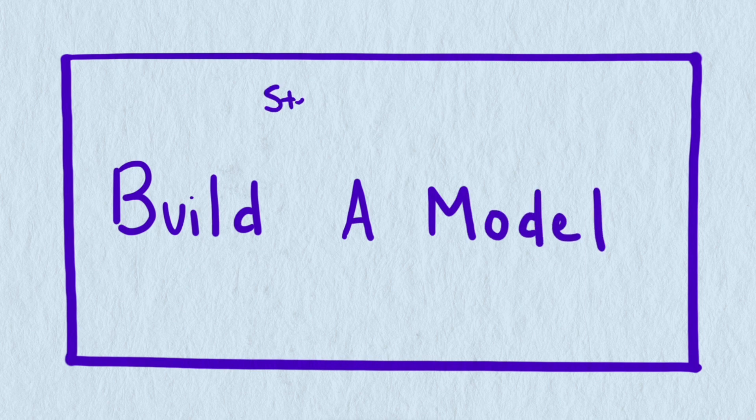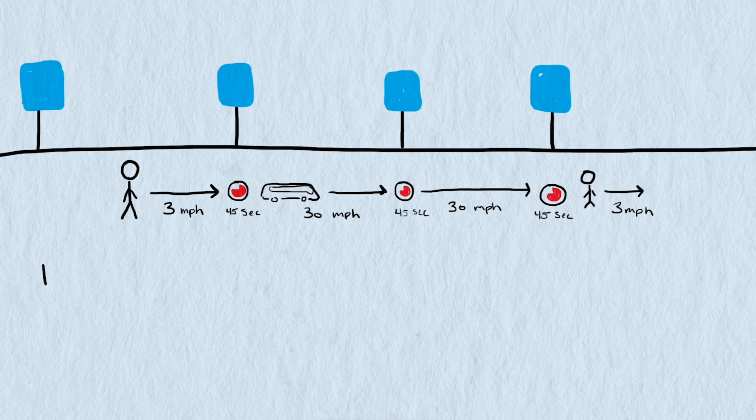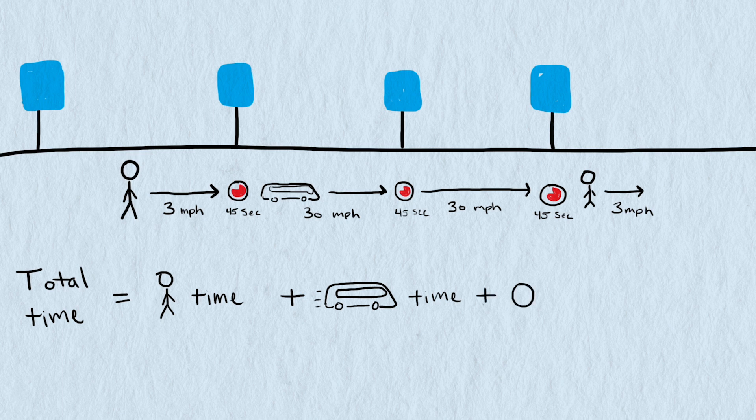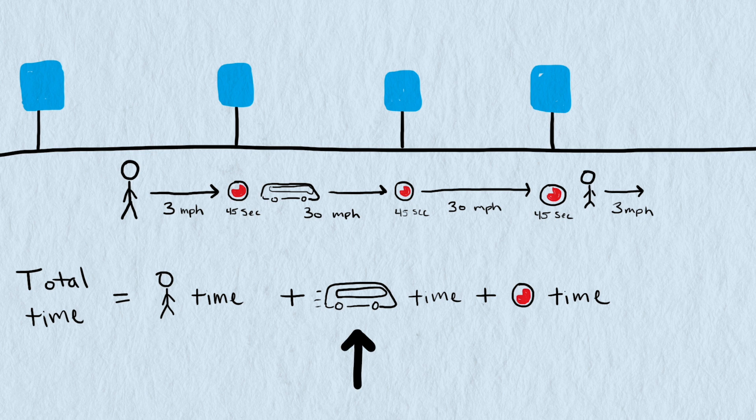That is step number 3 in the modeling process. Our model will be a function that uses the values we've assumed and our input variable of the number of bus stops and the outcome is the time to complete the trip. The time it takes can be split up into three different categories: Walking time, driving time, and stopped time.